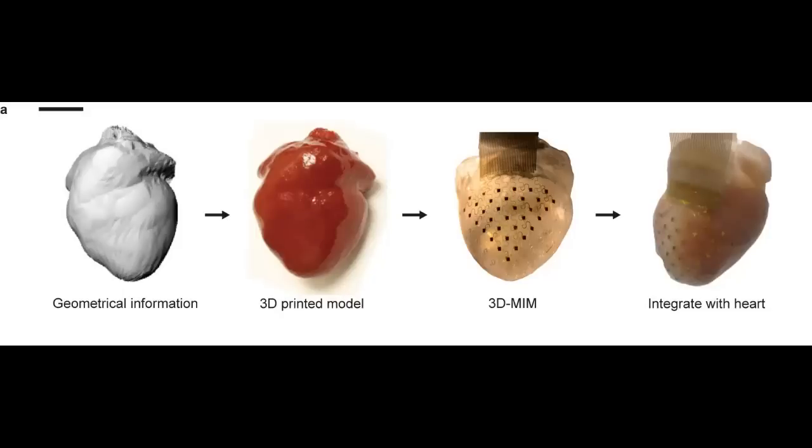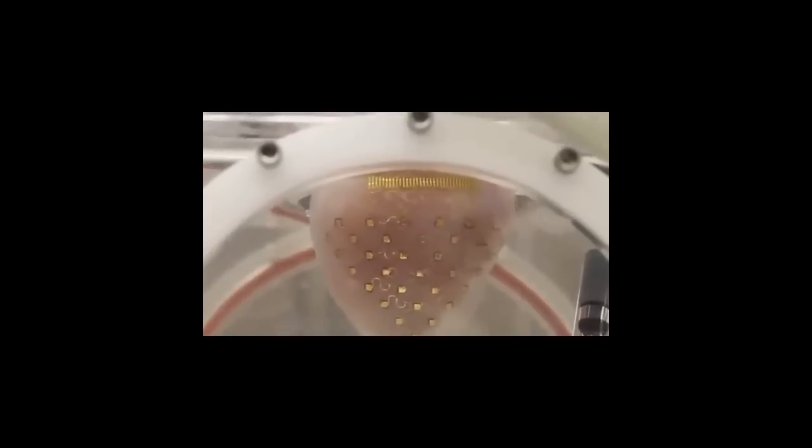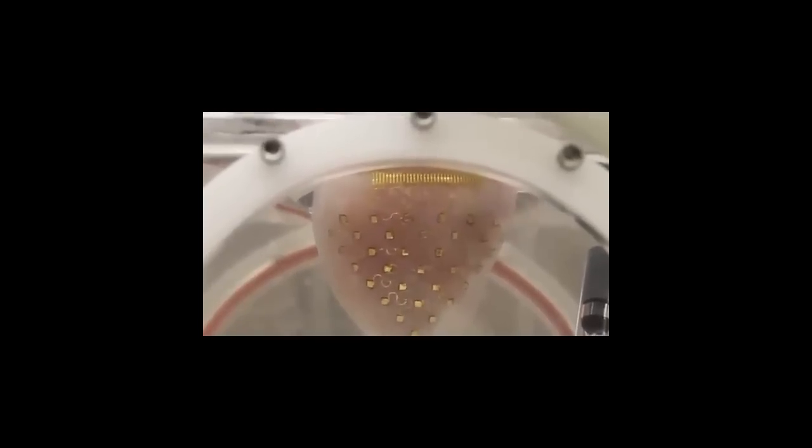The membrane is slightly smaller than the heart, but it is flexible and stretches so it can fit securely around the heart. This ensures that the membrane stays on the heart and that the electronic sensors and actuators are making constant contact with the heart.